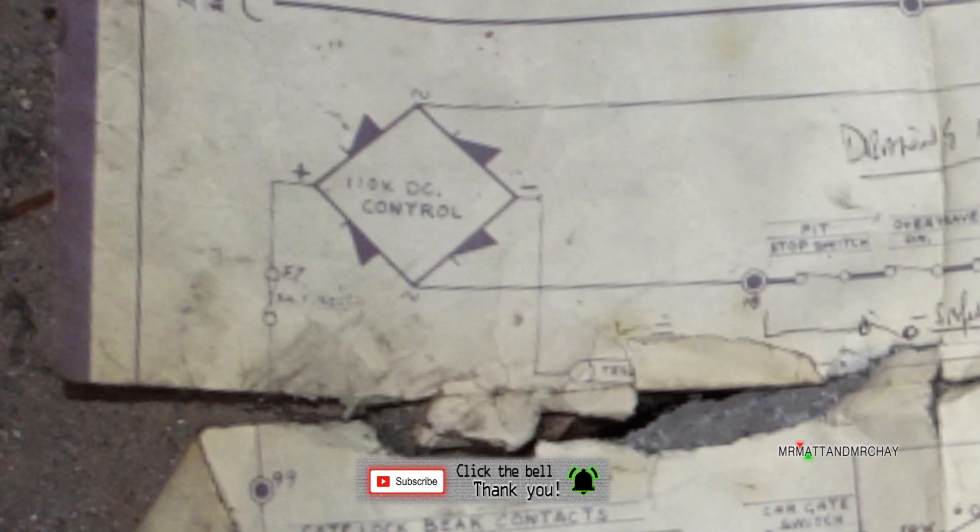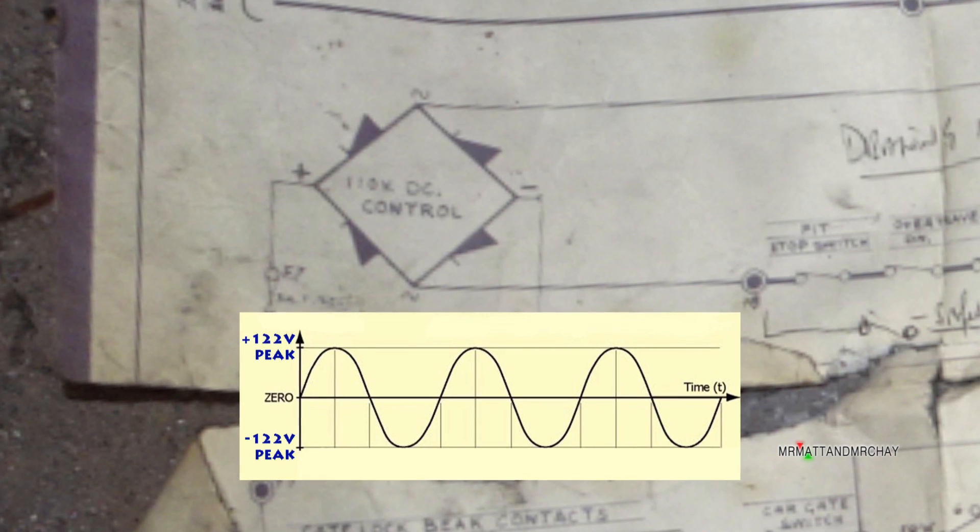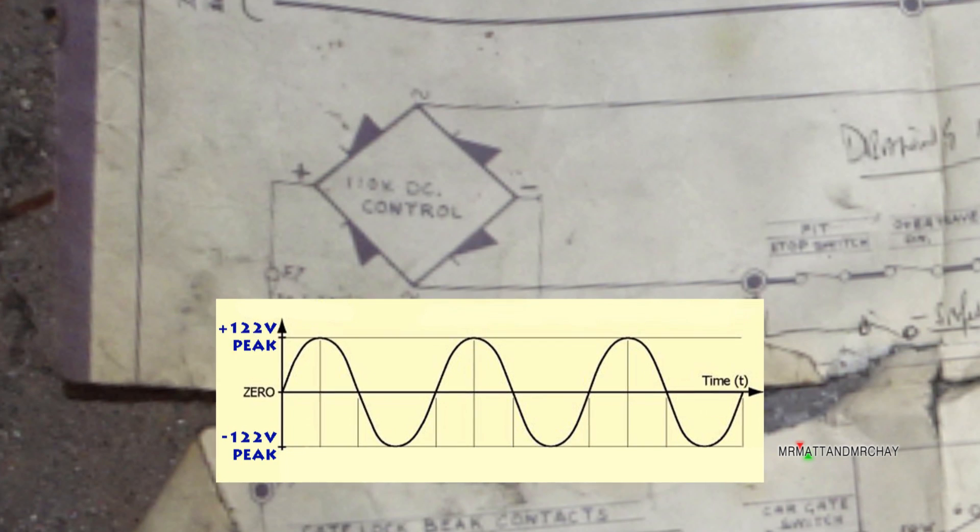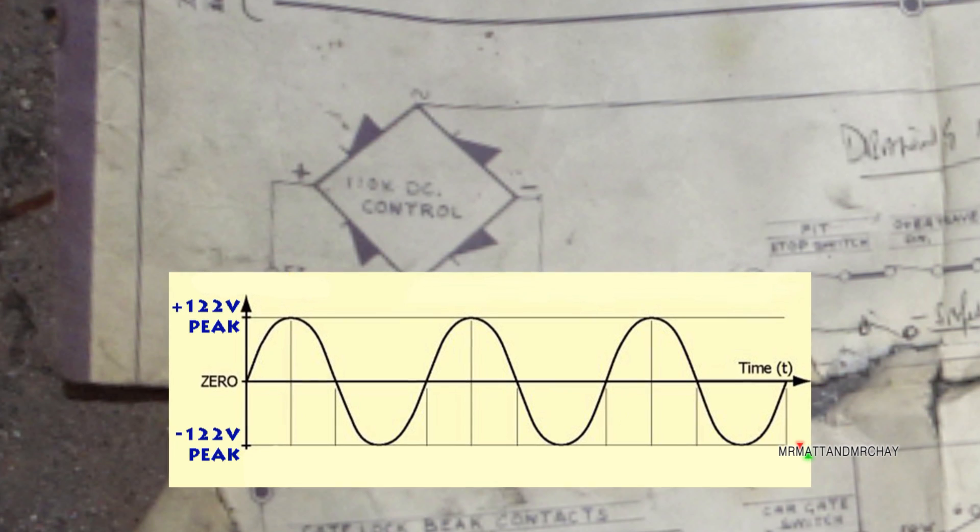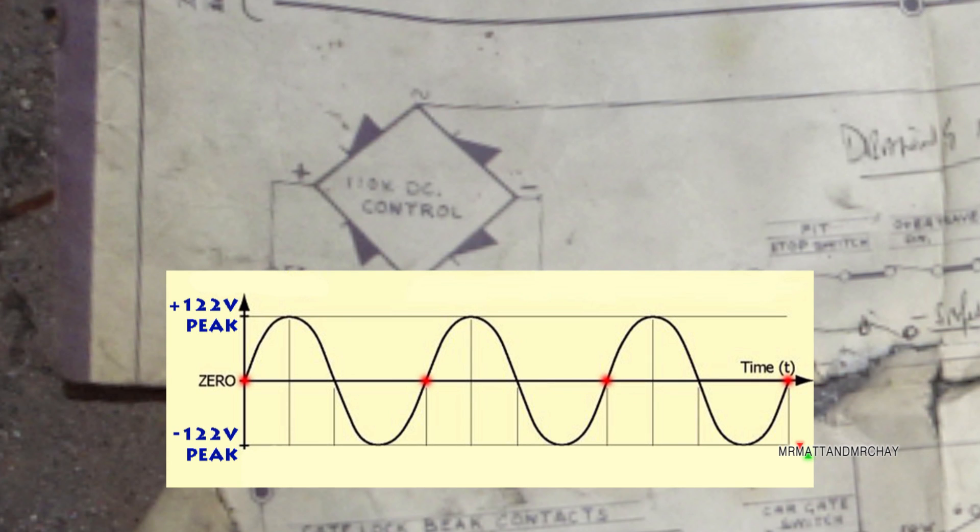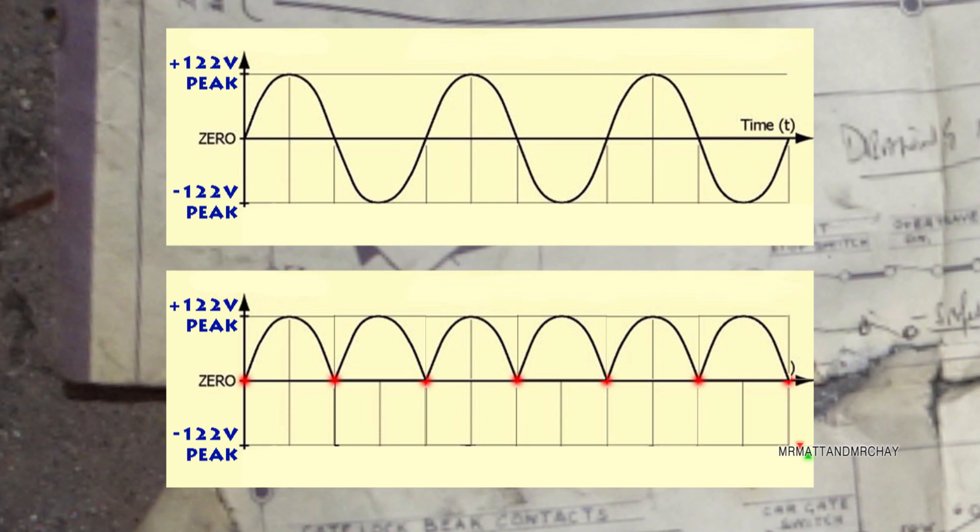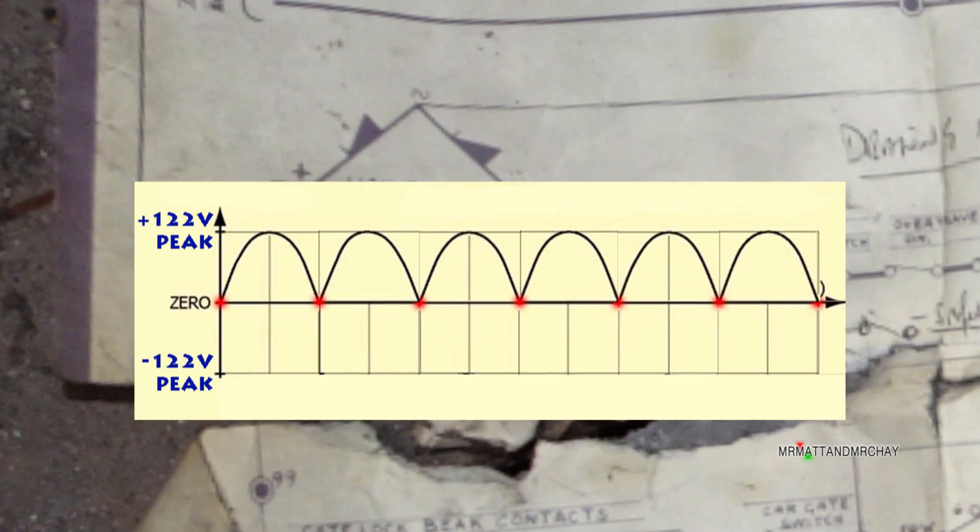This converts AC to a DC voltage. In the UK, the AC main supply cycles 50 times per second. One cycle is represented by these red dots. The bridge rectifier inverts the negative voltage into a positive voltage so that the sine wave that used to go up and down now only goes up. This creates a DC voltage.